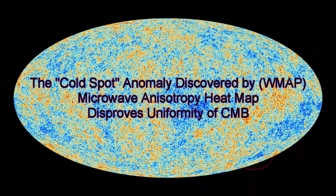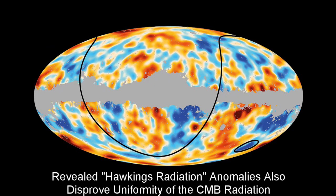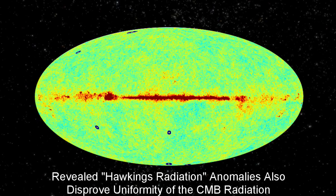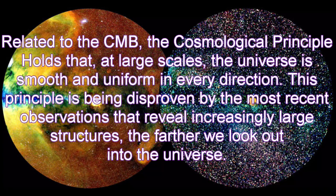The cold spot anomaly discovered by WMAP disproves the uniformity of CMB. Hawking's radiation anomalies also disprove uniformity of the CMB radiation. Related to the CMB, the cosmological principle holds that at large scales the universe is smooth and uniform in every direction. This principle is being disproven by the most recent observations that reveal increasingly large structures the farther we look out into the universe.